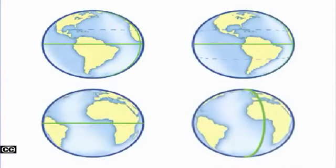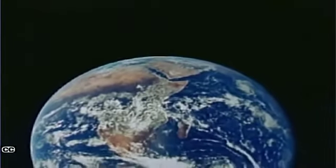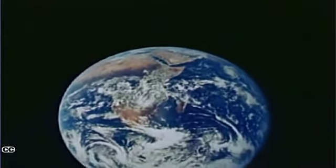Each of these lines—the Tropic of Cancer, the Tropic of Capricorn, the equator, and the prime meridian—help us locate places on Earth and look at only a part of a very large place.